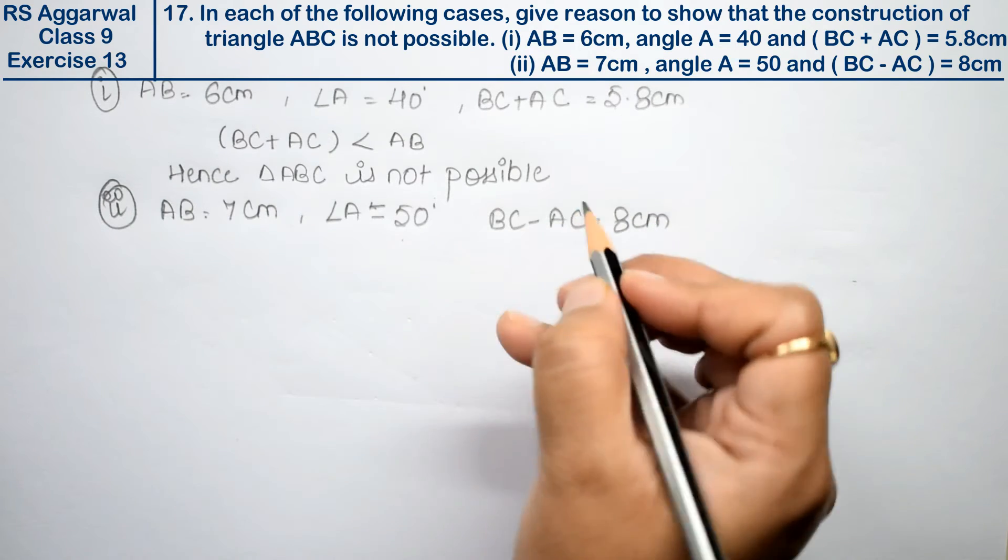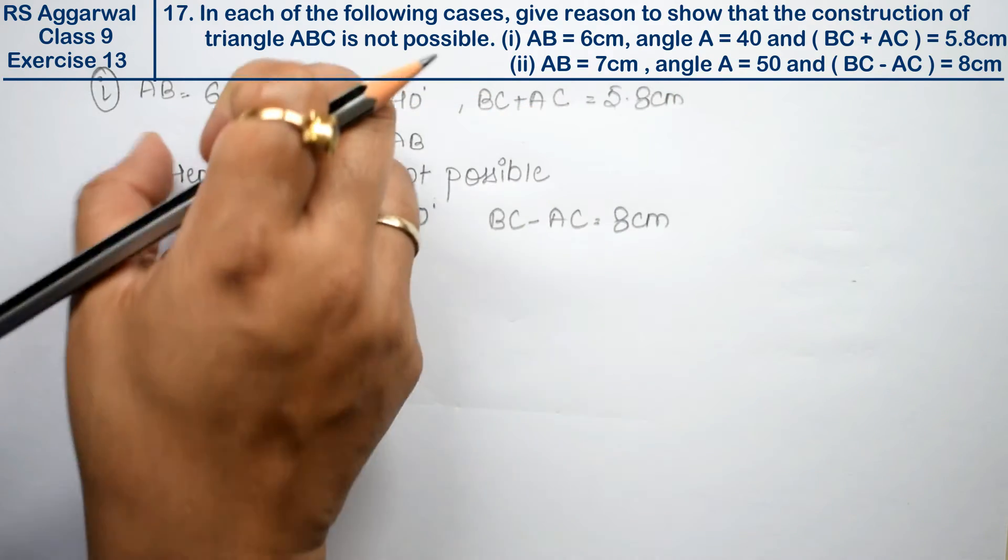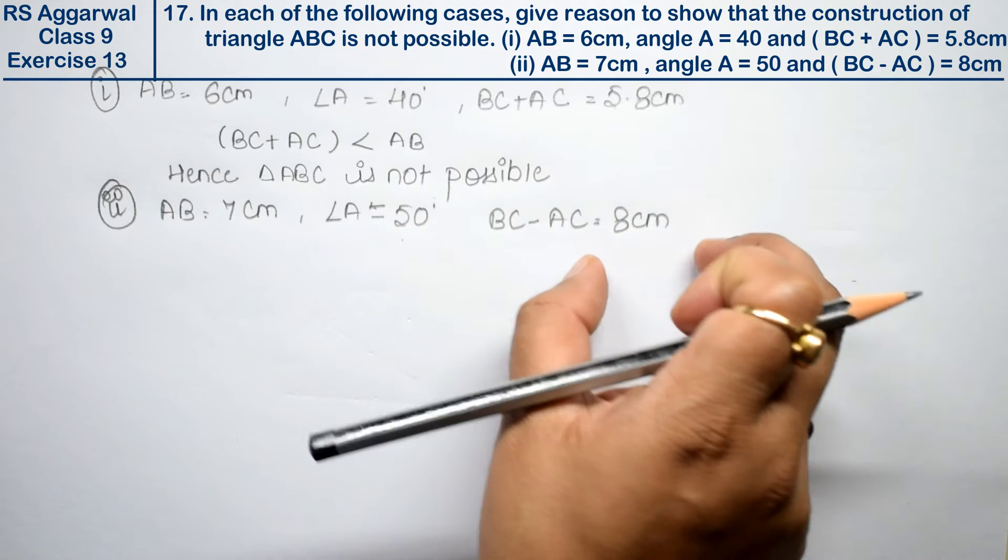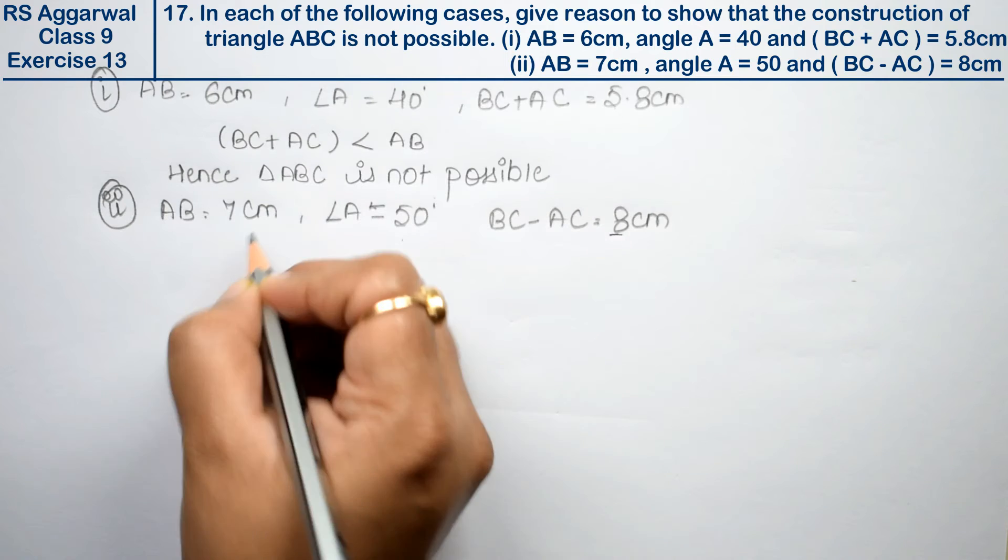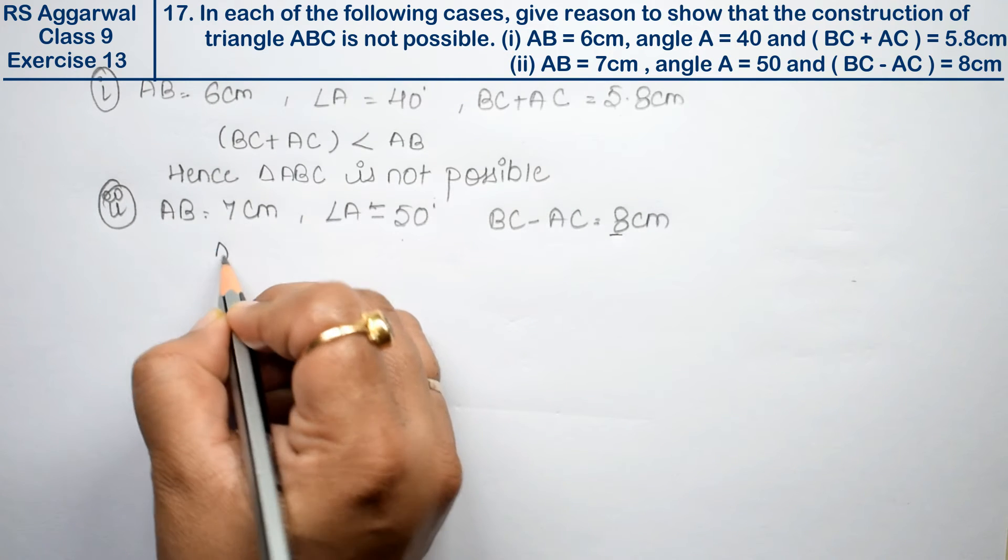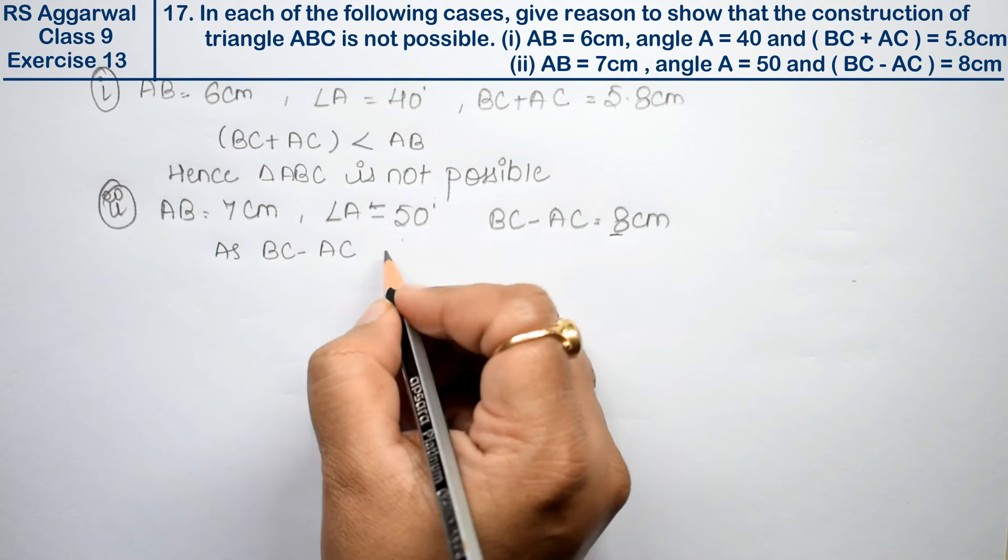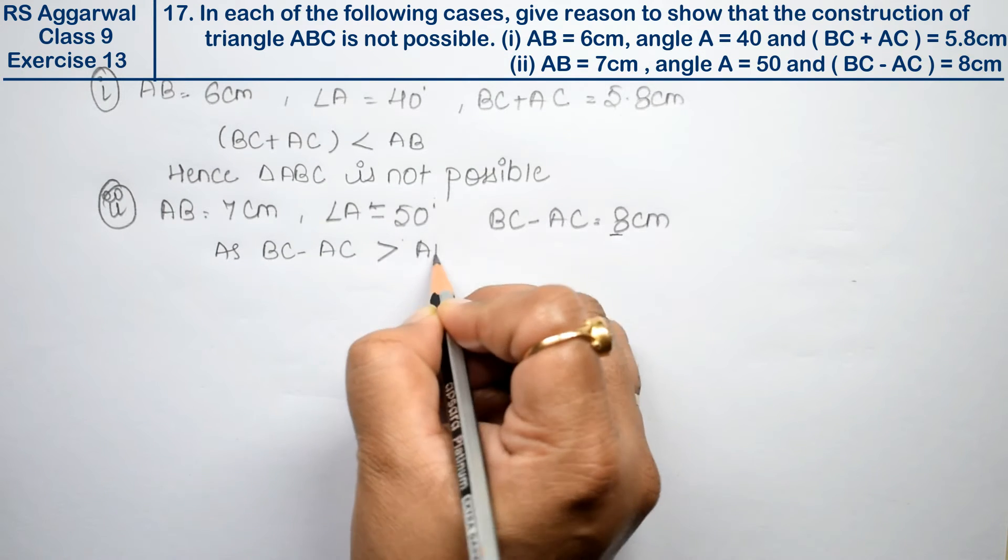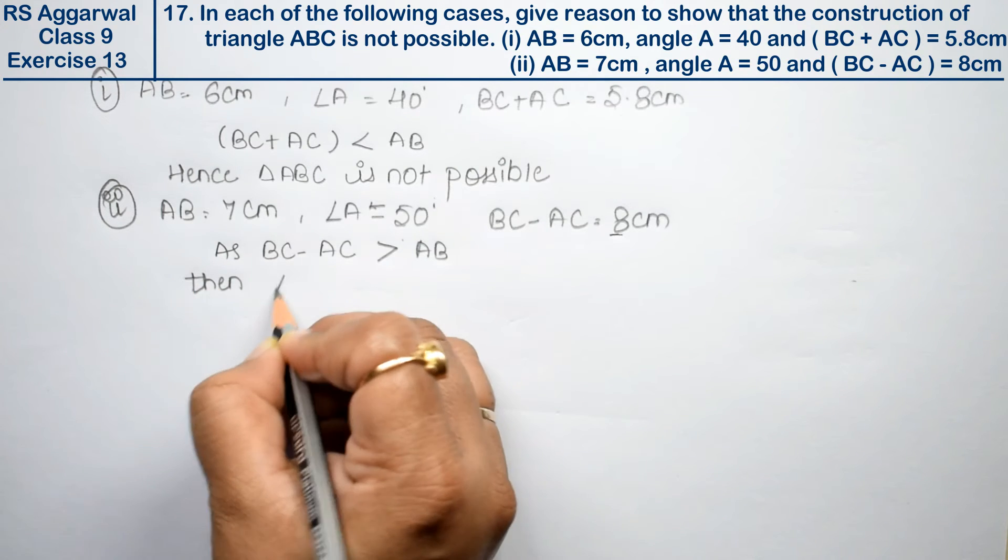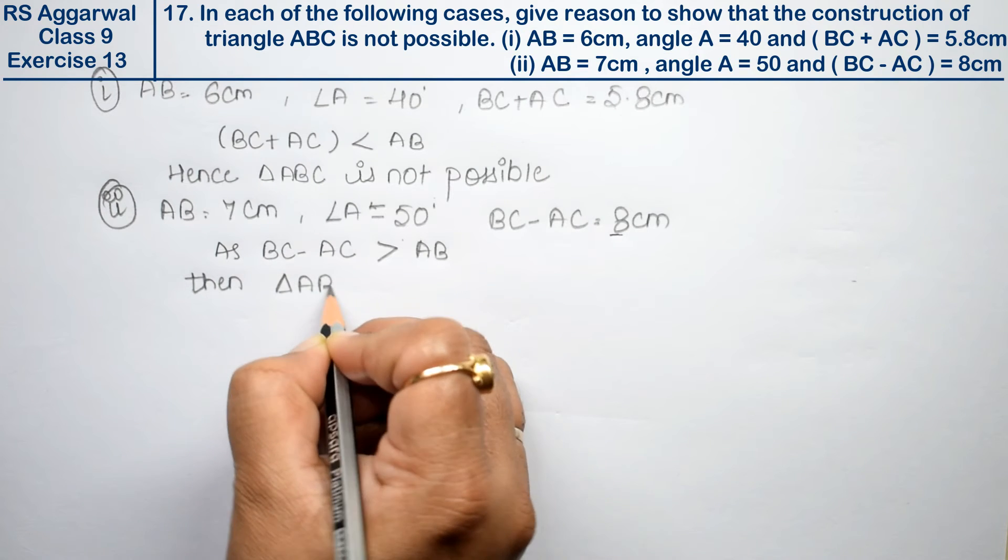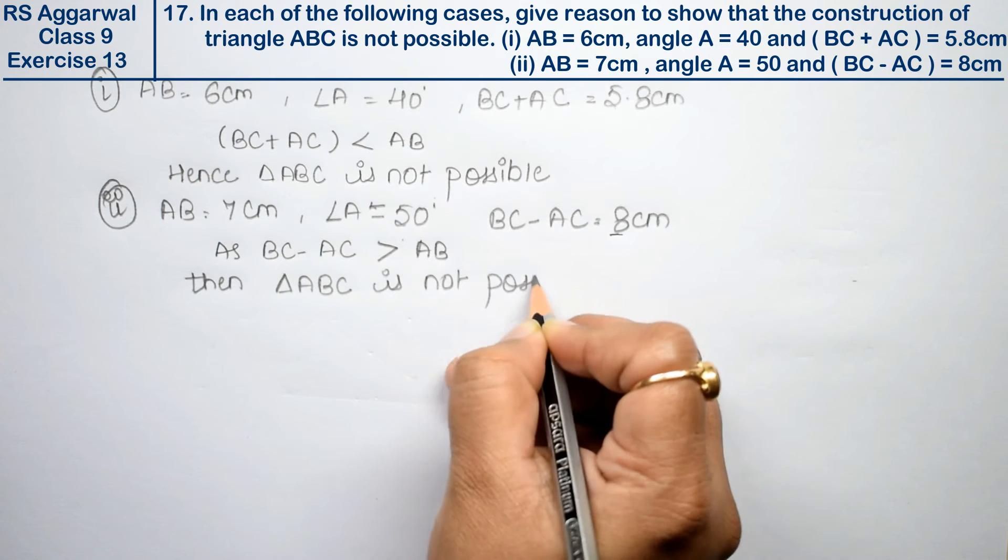When the two sides add, they should be more than third side. And when the two sides subtract, they should be less than third side. Here we can see that this is more than third side. As BC minus AC is greater than AB, then triangle ABC is not possible.